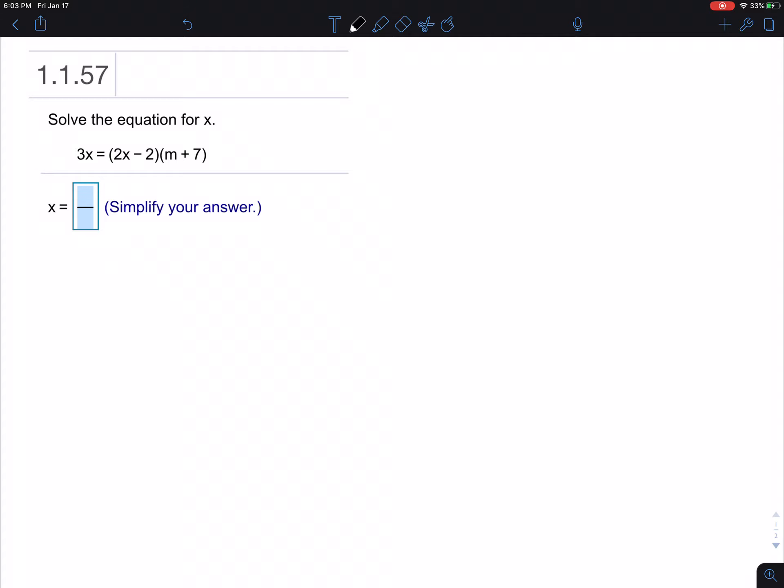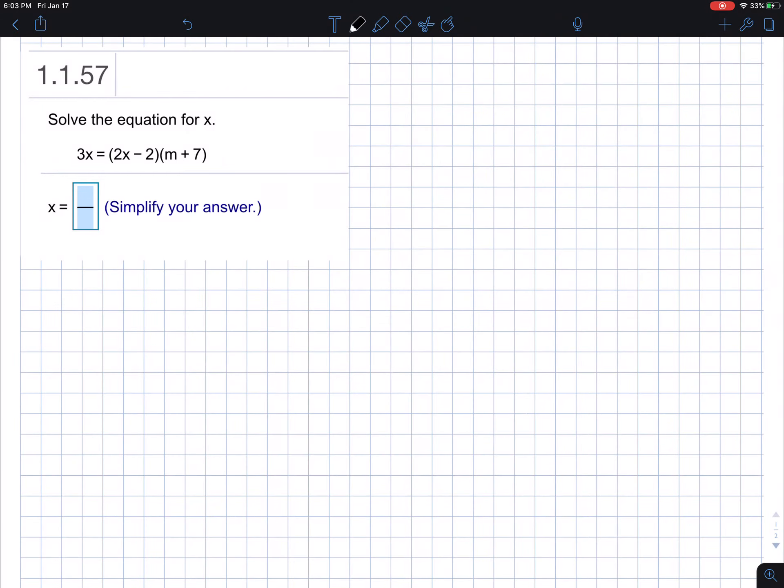It says solve the equation for x. So let's take a look at this one. So let's start by getting a copy of the original. We have 3x equals 2x minus 2 times m plus 7. And then x is the solve for x.